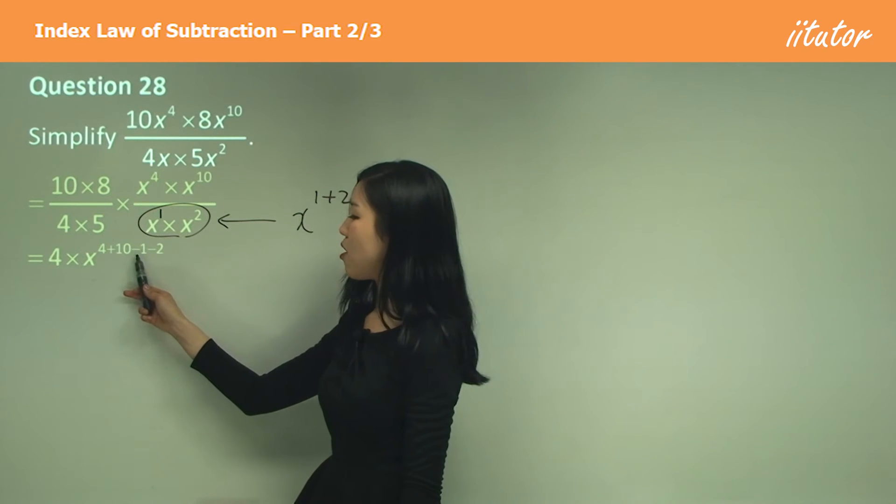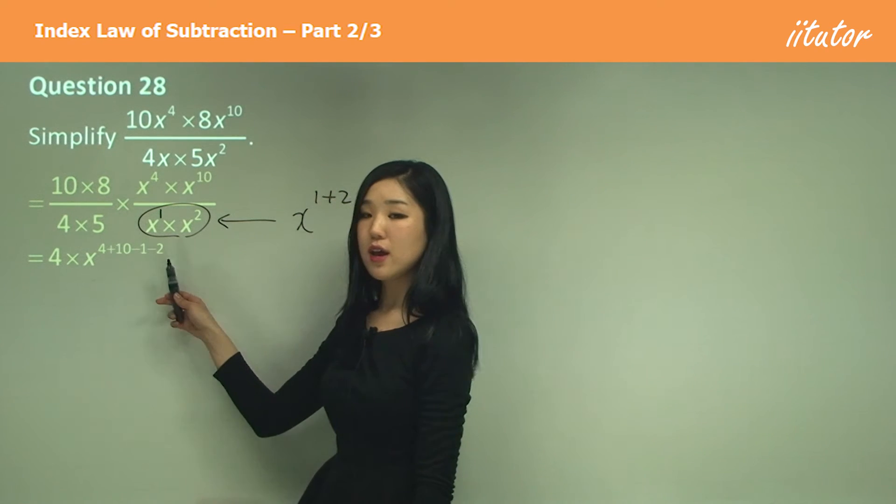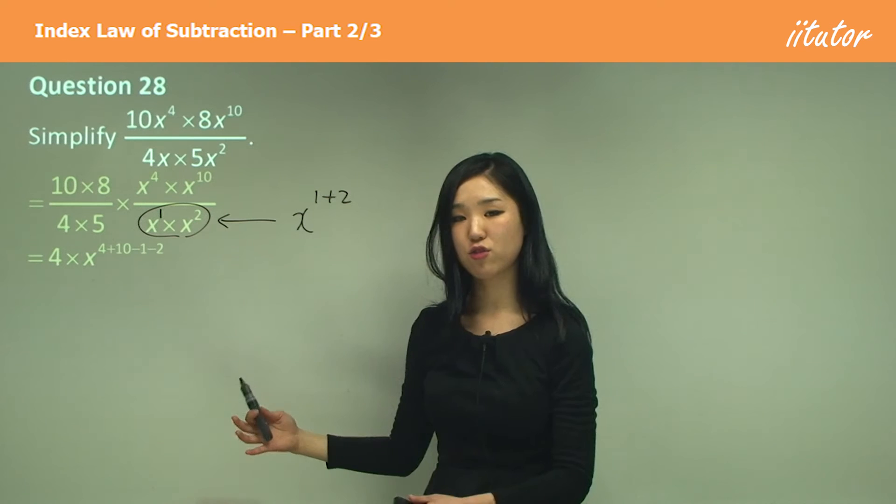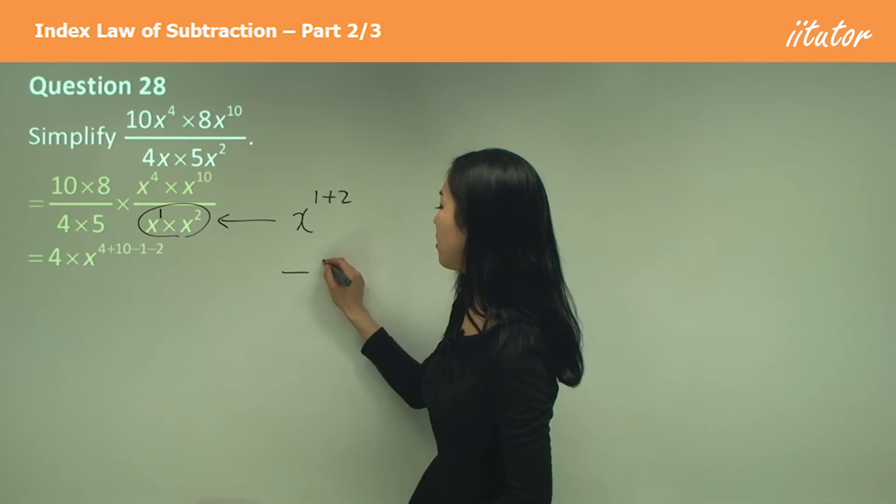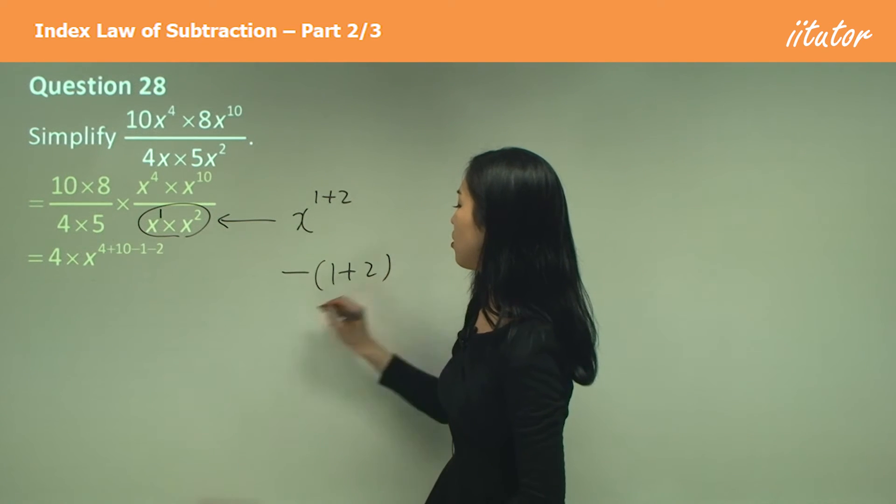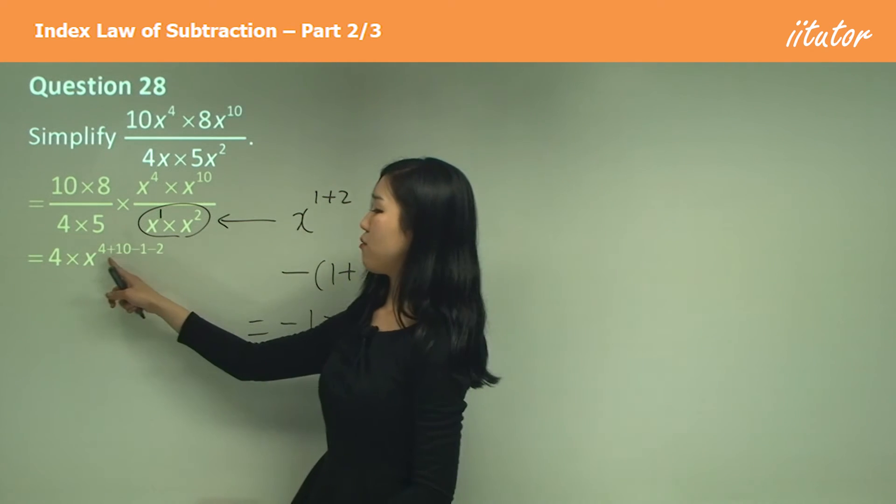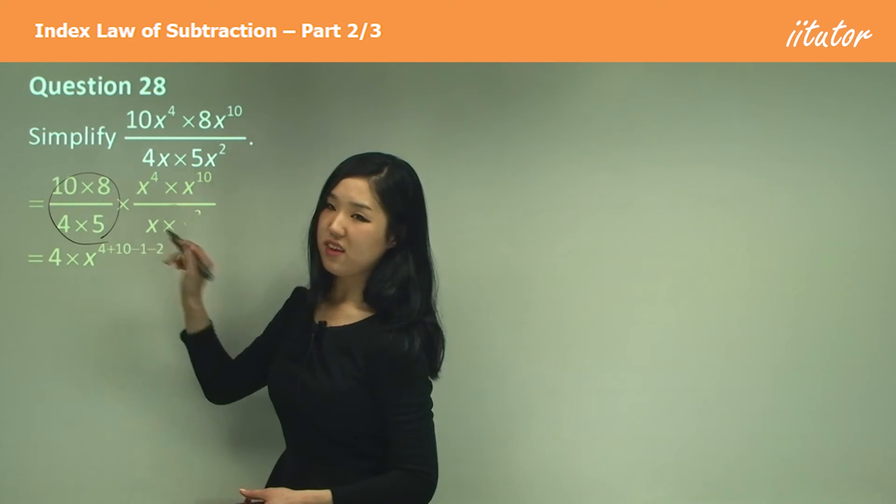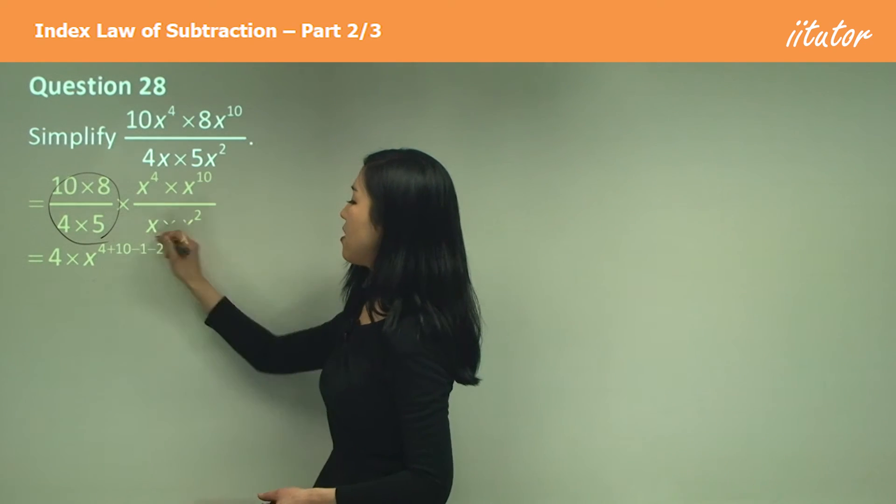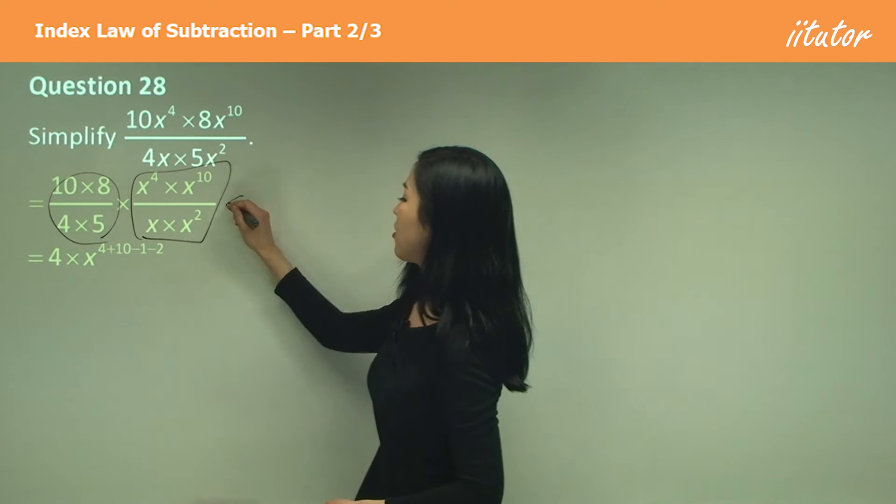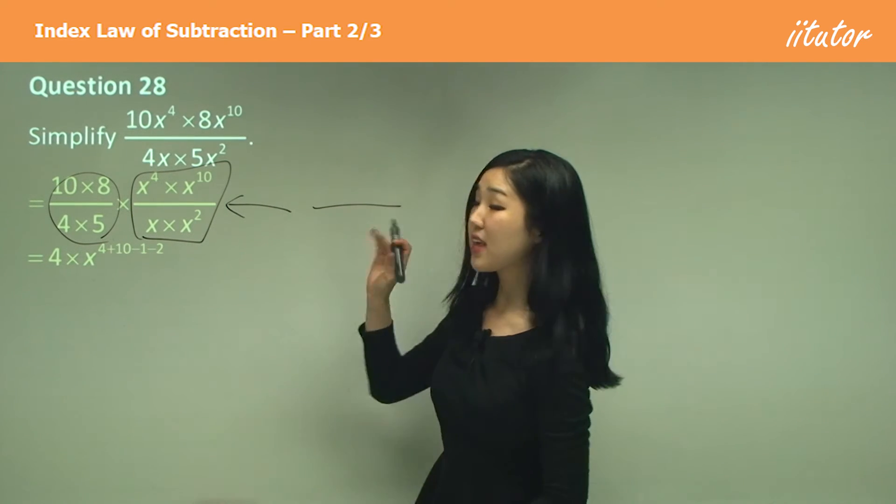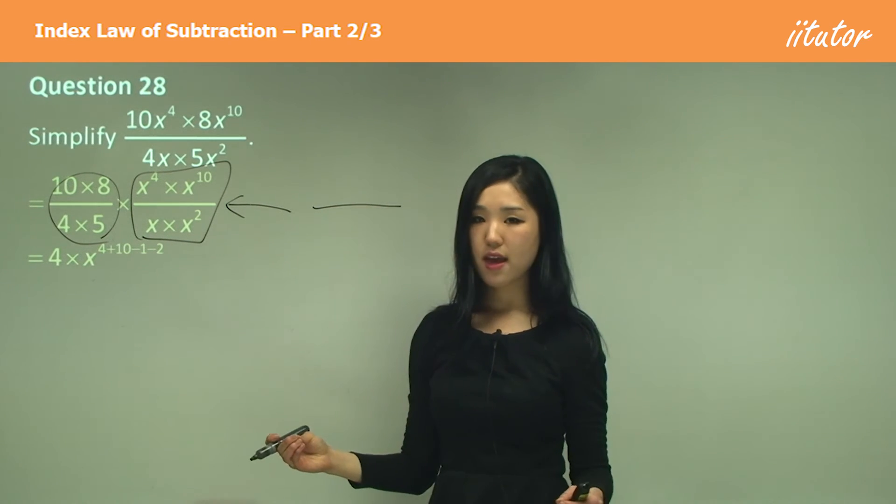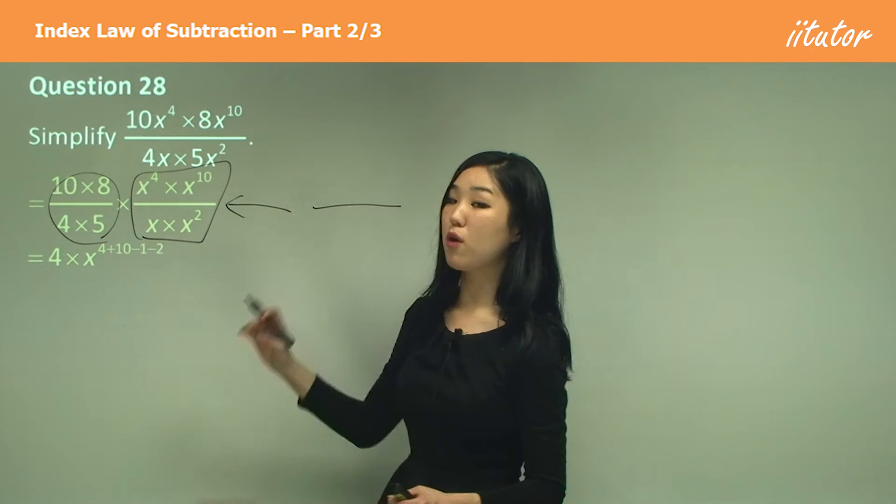That's why it's not minus 1 plus 2. It's minus 1 minus 2, because I'm subtracting 1 plus 2, which becomes minus 1 minus 2. So it's 4 plus 10 minus 1 minus 2. Hopefully this part is easy. But this part, I'm going to simplify it like this first. I'll keep the fraction sign as it is and simplify the top and bottom individually.